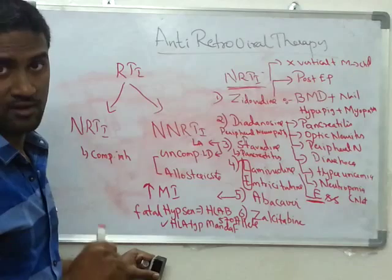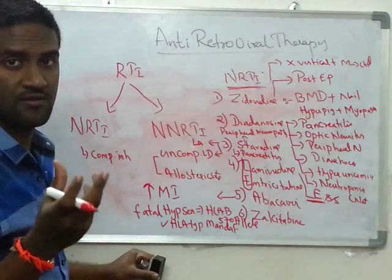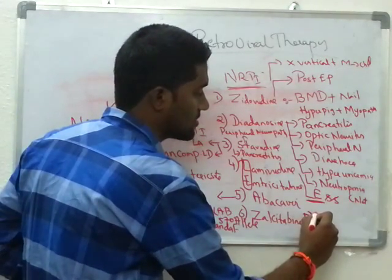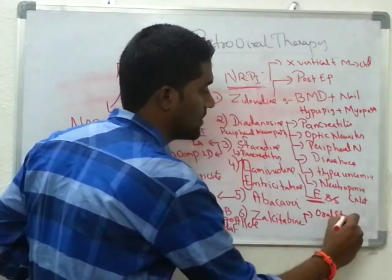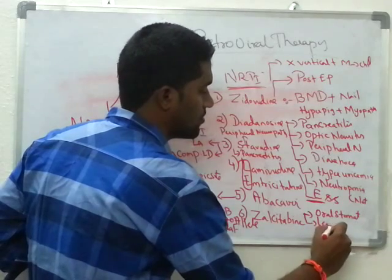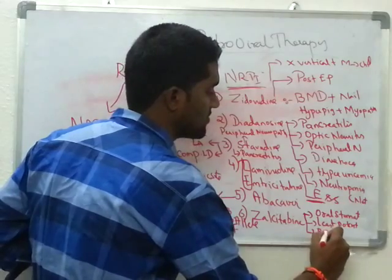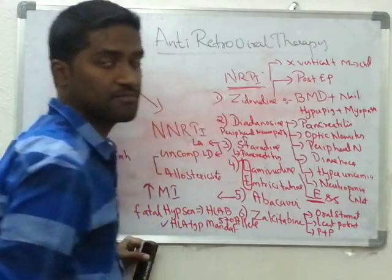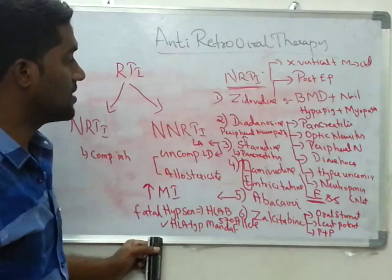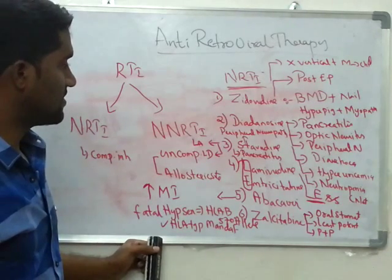Zalcitabine — it sounds like something related to the oral cavity, so it has a specific side effect called oral stomatitis. It is the least potent drug in this group. Also remember it will cause pancreatitis plus peripheral neuropathy. So the NRTI drugs are: Zidovudine, Didanosine, Stavudine, Lamivudine, Emtricitabine, Abacavir, and Zalcitabine.